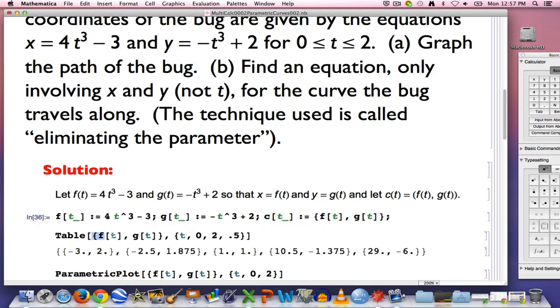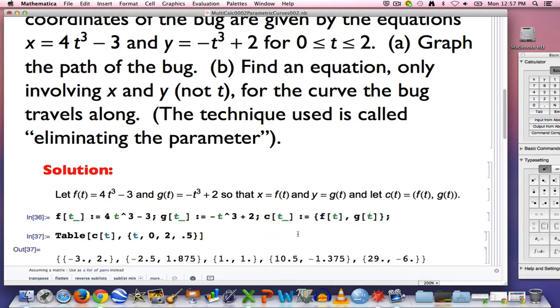In table, then, I can replace F of t comma G of t with C of t, if I prefer, to see the outputs of this function starting at zero, going up by increments of 0.5 and ending at 2. In other words, the outputs are going to occur at 0, 0.5, 1, 1.5, and 2. And I can replace what I just had here with C of t once C of t is entered. And you get the exact same output.